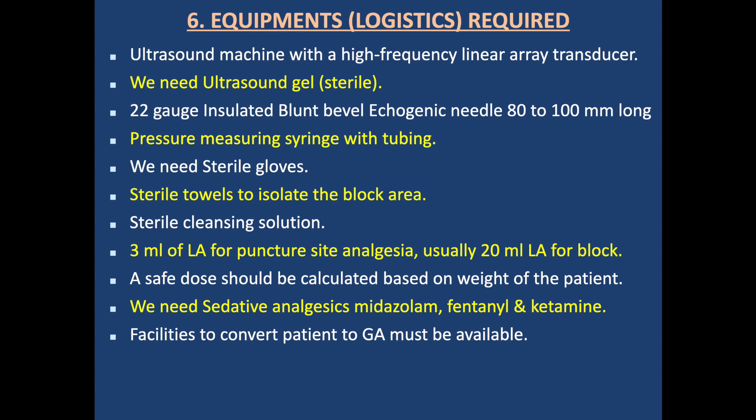Equipment required: an ultrasound machine with a high-frequency linear array transducer, sterile ultrasound gel, a 22-gauge insulated blunt-bevel echogenic needle 80 to 100 mm long, pressure-monitoring syringes with tubing, sterile gloves, and a sterile towel to isolate the block area. We need a sterile cleansing solution. For puncture site analgesia, we need 3 ml of local anesthetic. A safe dose should be calculated based on body weight. The usual volume required for the block is 20 ml, may be increased to 25-30 ml, but a safe dose must not be exceeded. Sedative analgesic drugs such as midazolam, fentanyl, and ketamine are needed, along with facilities to convert to general anesthesia.